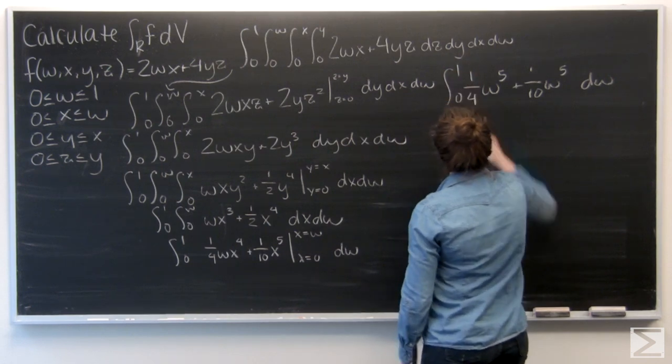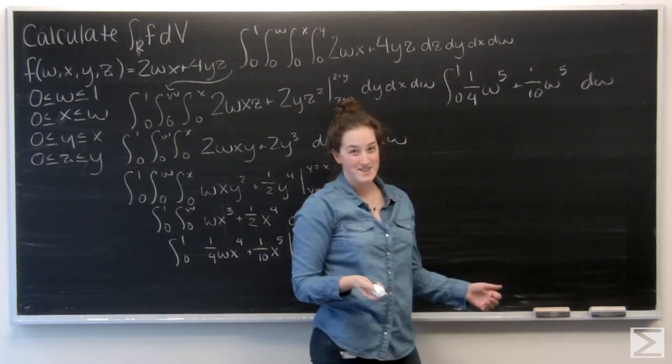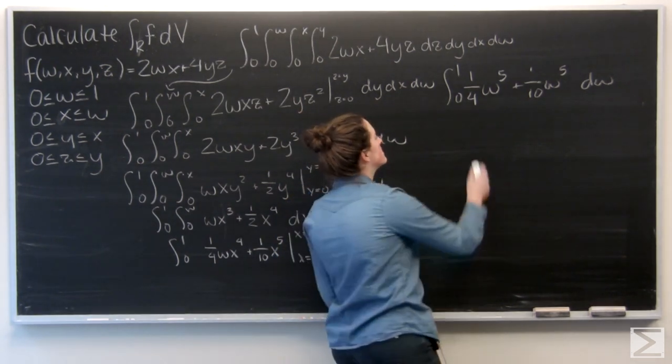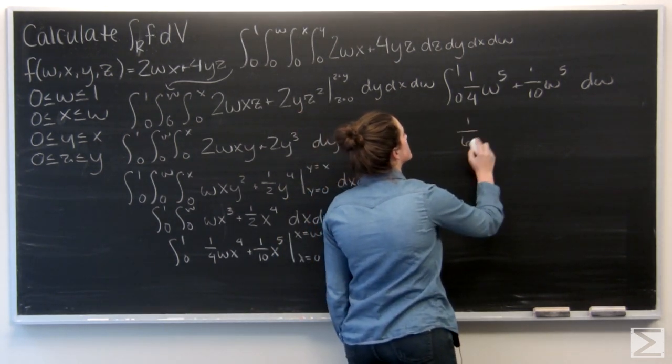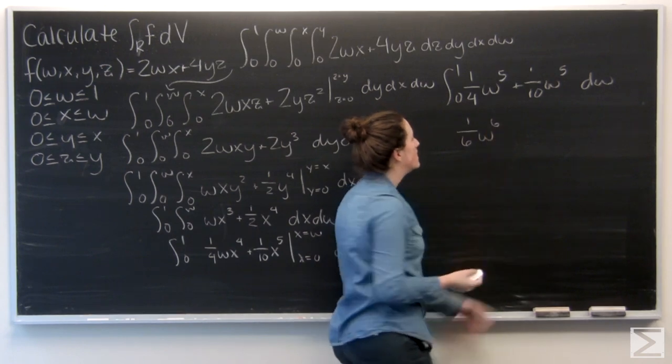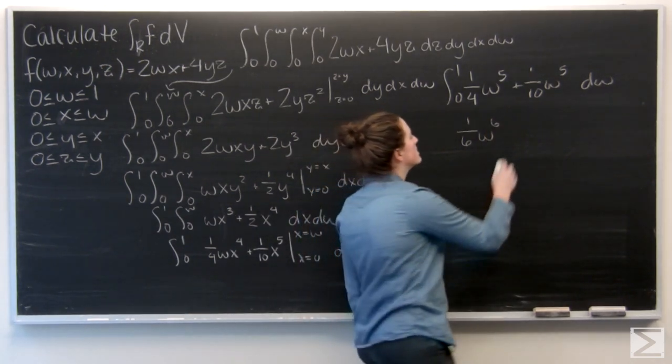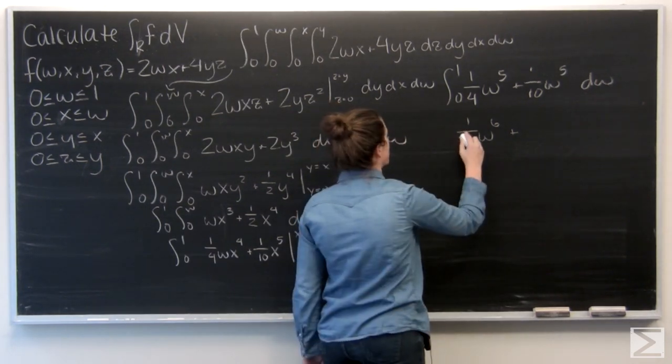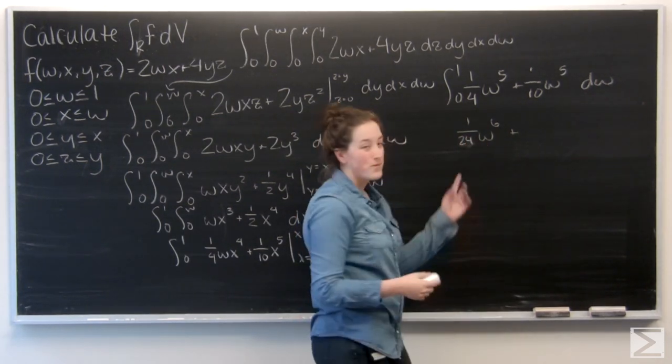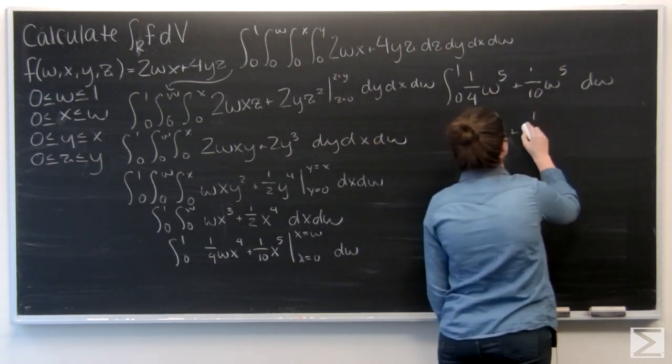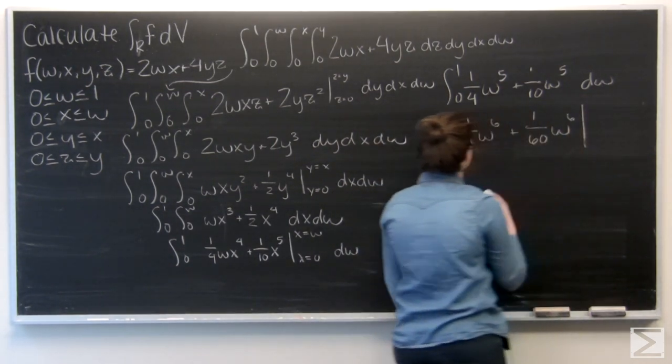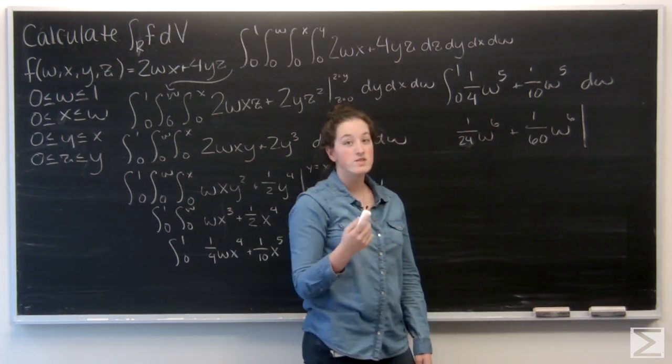So, alright, this is our last integration. And we're doing it with respect to w this time. So 1 twenty fourth w to the sixth, and 1 over 60 w to the sixth. Then I want to evaluate that from w equals 0 to w equals 1.